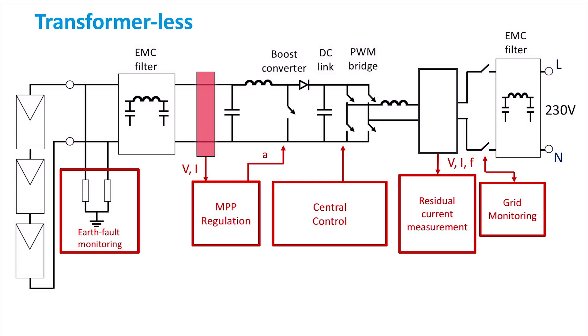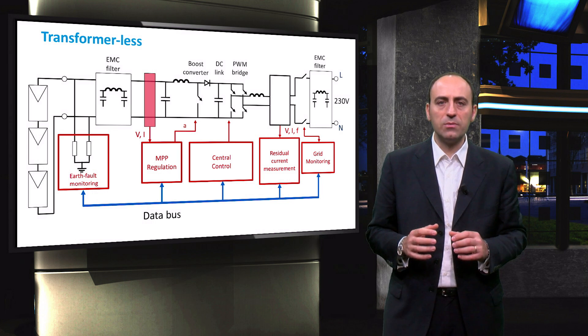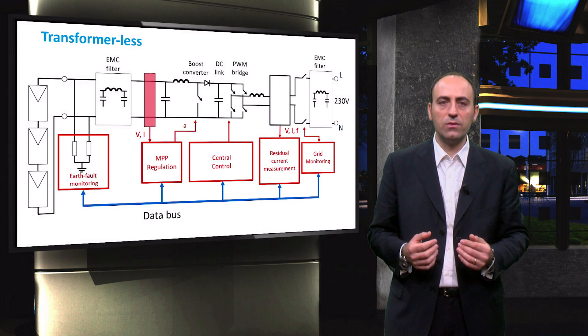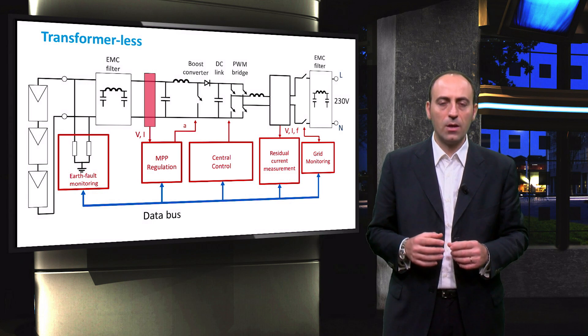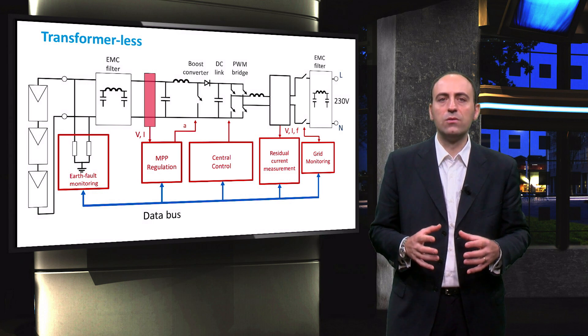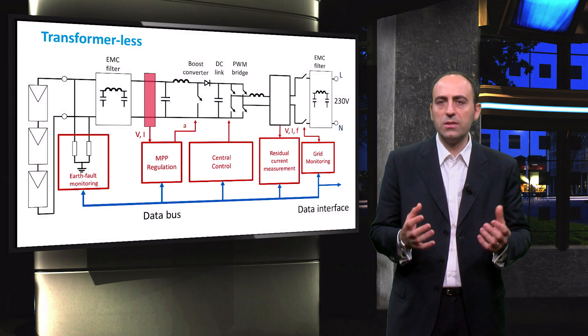Finally, the output of the inverter can be connected to the grid, generally at around 230 volts. All the control and monitor systems that we can find inside the inverter are connected between each other through a data bus. The data bus is then connected to a data interface, which is normally a screen on the chassis of the inverter.